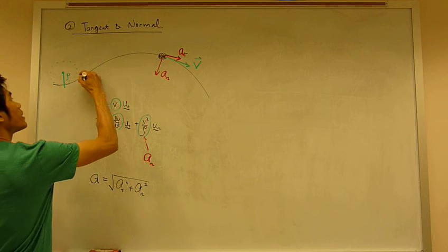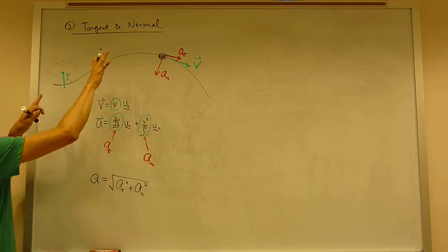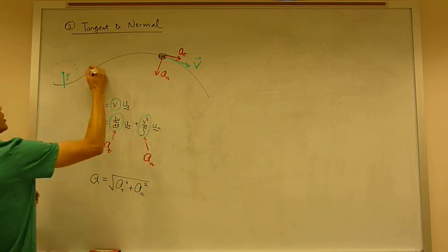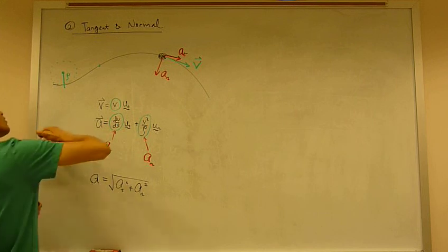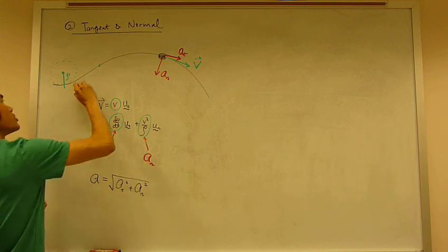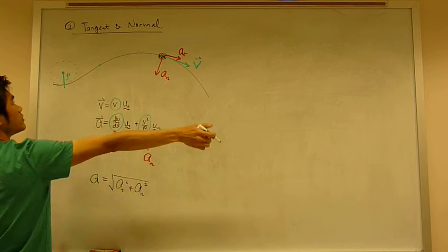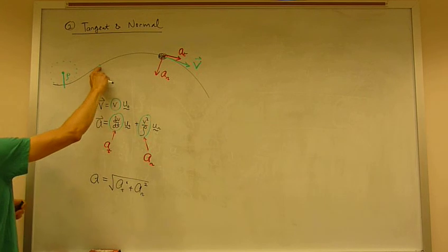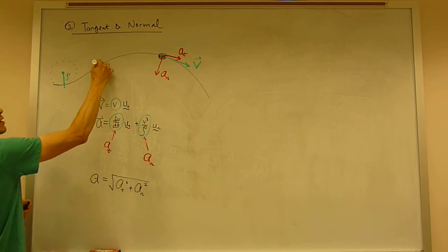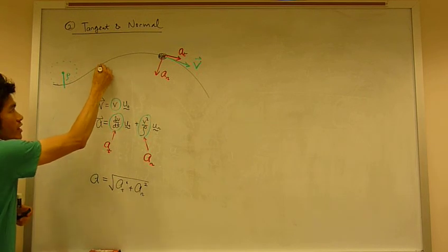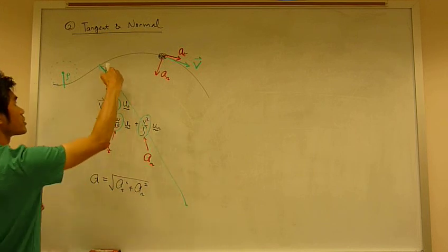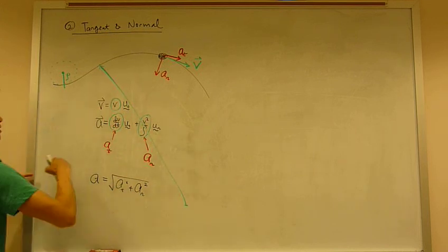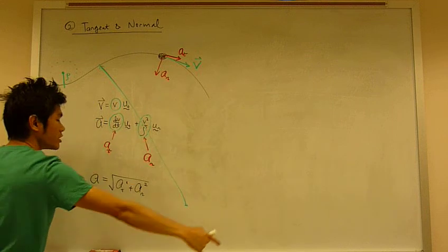So let's say a more flatter part of the curve, let's say this point right here. When you try to fit an imaginary circle that is tangent to this point right here, the radius of curvature then will be quite long, because you need to measure from this point to the center of this imaginary circle.